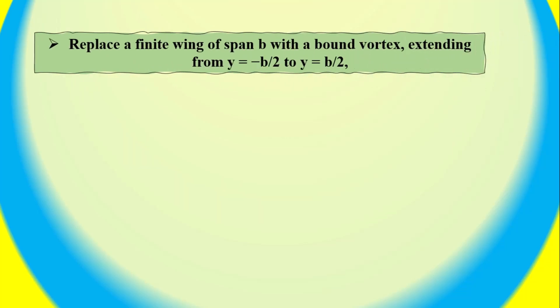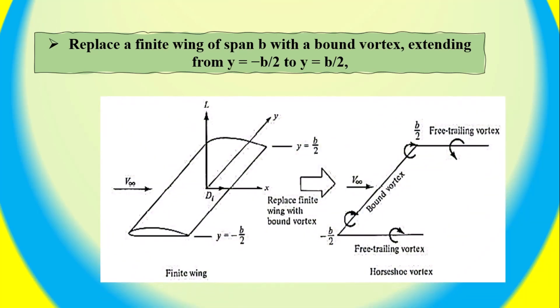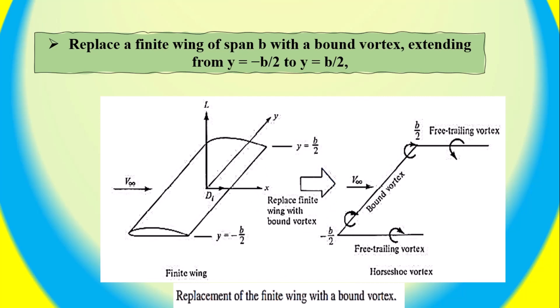Replace a finite wing of span B with a bound vortex, extending from Y equals negative B/2 to Y equals B/2. This is the replacement of the finite, or three-dimensional, wing with a bound vortex.